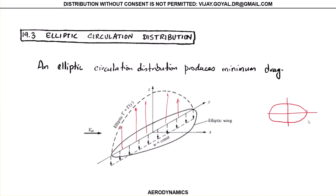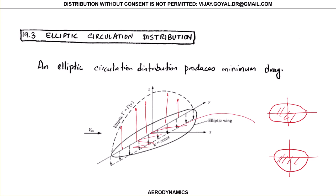This elliptic wing is going to produce the minimum drag. However, because of your velocity, the distribution looks something more like this. This is the shape of the wing itself — these are shapes of the wing, this section right here at the bottom. That's what this really represents.